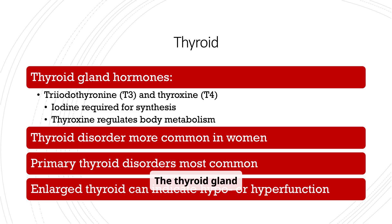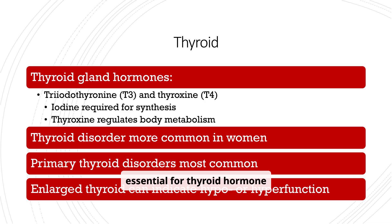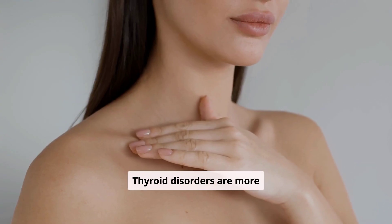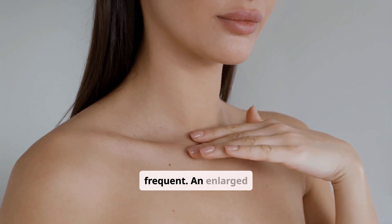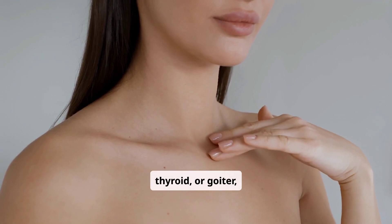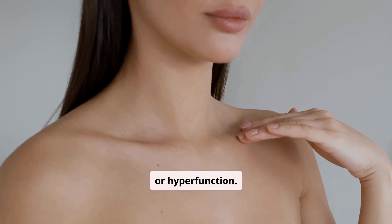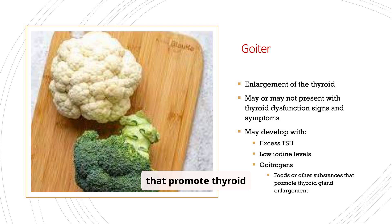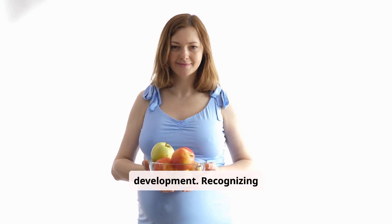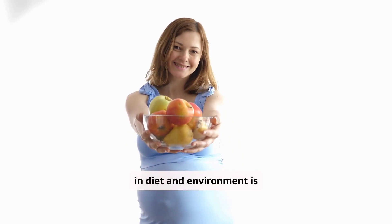The thyroid gland produces T3 and T4, which regulate body metabolism. Iodine is essential for thyroid hormone synthesis. Thyroid disorders are more common in women, and primary thyroid disorders are the most frequent. An enlarged thyroid, or goiter, can indicate either hypo or hyperfunction. Goitrogens, substances that promote thyroid enlargement, can contribute to goiter development, and recognizing potential goitrogenic factors in diet and environment is important.